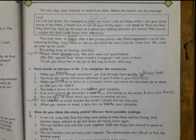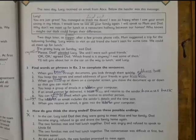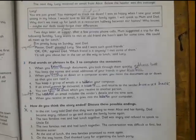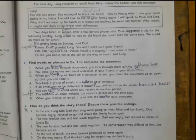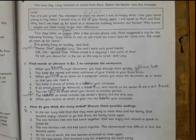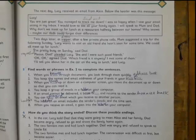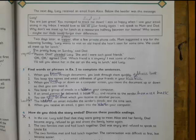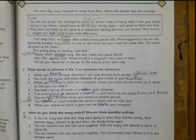So come to the exercise. Find words or phrases in Exercise 2 to complete the sentences. I have filled it up. When you browse through documents, you look through them quickly. You keep the names and email addresses of your friends in your address book. Third one: when you scroll up or down on a computer screen, you move the document up or down so that you may read it.